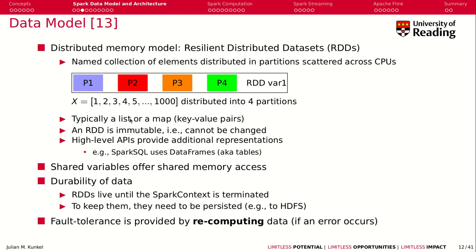What data is stored in an RDD? It's either a list or a key-value pair, with key-value pairs stored in a map. Importantly, you cannot change the content of an RDD — once you assign an RDD to certain data, it is immutable and can never be changed. When you perform operations on the data, you obtain a new RDD, never changing the previous one.